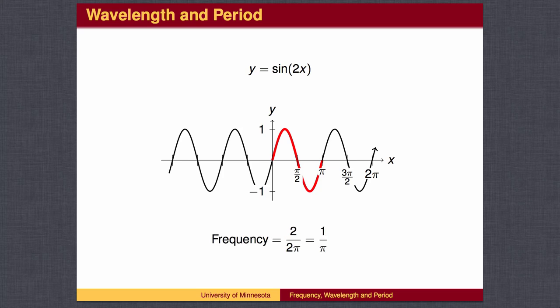The idea of frequency is more intuitive to physicists. The frequency of a wave is the number of waves that are completed in one unit of time, or in this case, one unit on the x-axis. If the wavelength is 2 pi, then there is one wave every 2 pi, so the frequency is 1 over 2 pi. In this case, b is 2, so there are two waves every 2 pi, or one wave every pi, so the frequency is 1 over pi.